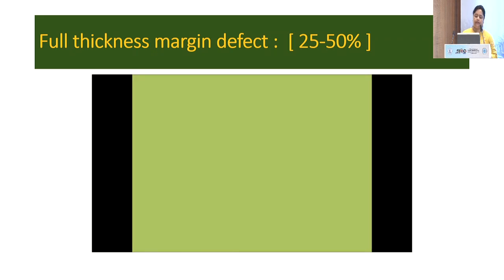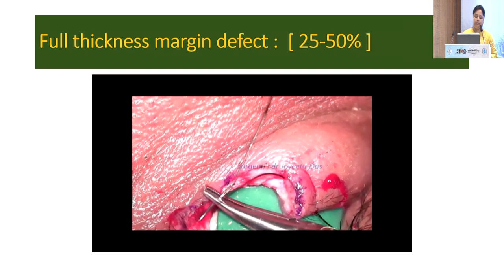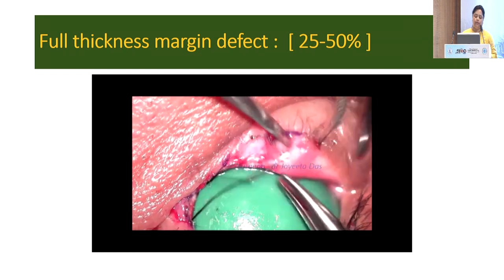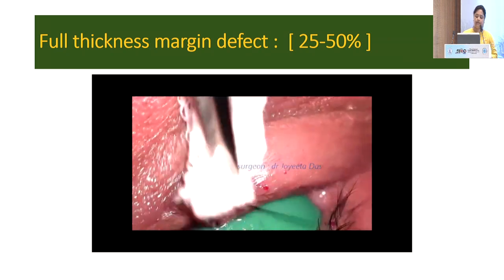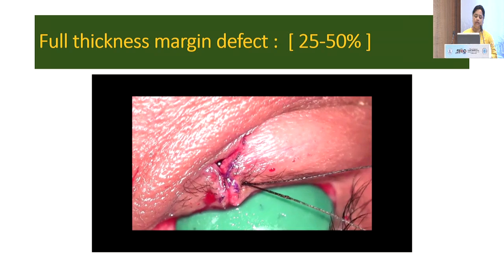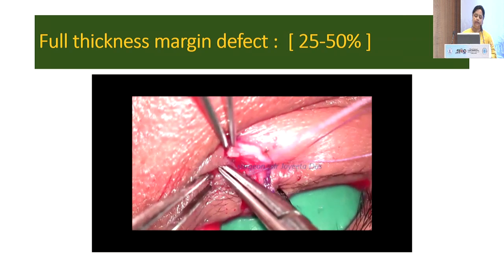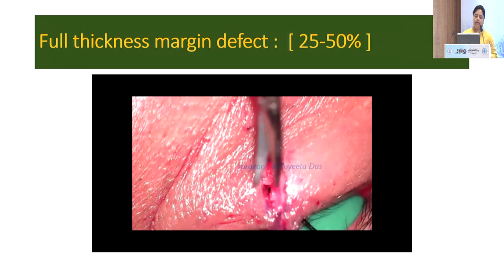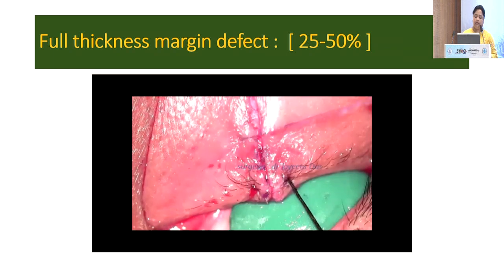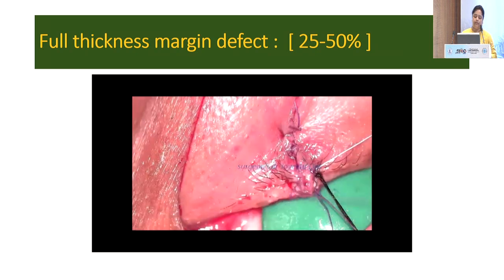Now coming to the full thickness margin defect: if it is a small defect of 25 to 50 percent, then direct closure can be done. First, a horizontal mattress and vertical mattress suture is given using the 5-3-3 millimeter rule. The suture is kept tight and long. The remaining sutures are given at the muscle and the tarsal plate by interrupted suture with 6-0 Vicryl. Finally, the long end of the suture is tied with an interrupted suture to avoid corneal trauma.